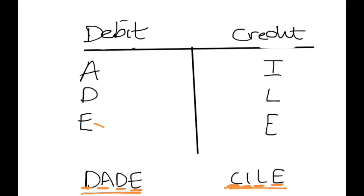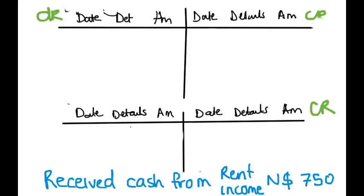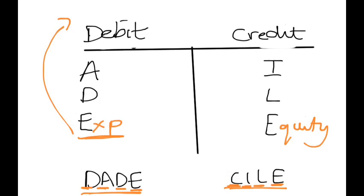If you get confused on which one is your expense and which one is your equity, just remember 'Daddy Kyle.' Expense is always after your daddy, because daddy pays the bills — just to simplify it. Before we get to the questions, I've prepared some questions. Let's take it to the double entry system.